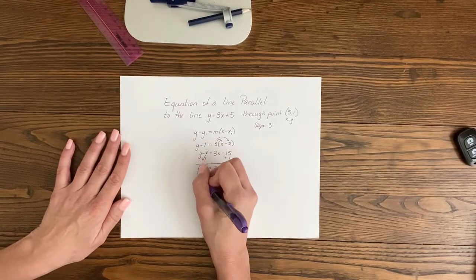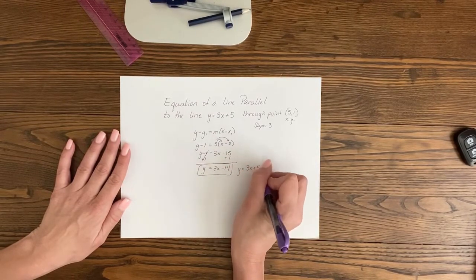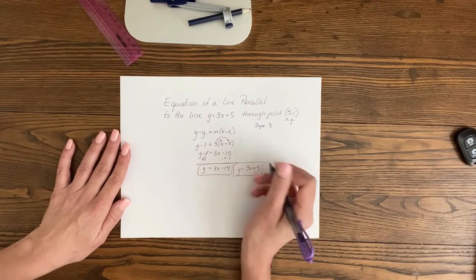This is the line that is parallel to the line y equals 3x plus 5 that goes through the point (5, 1).